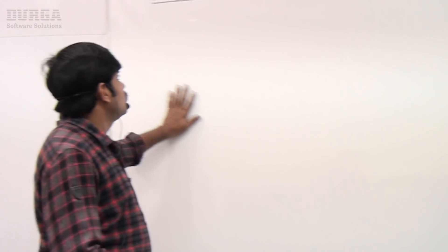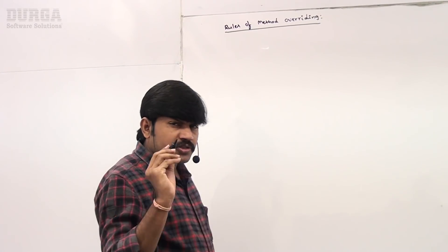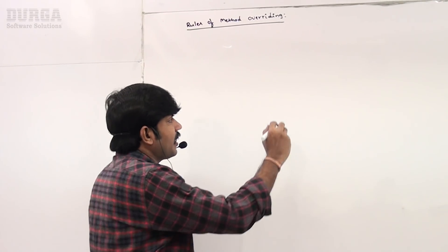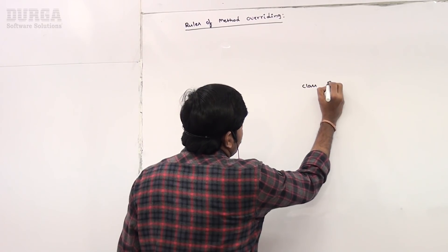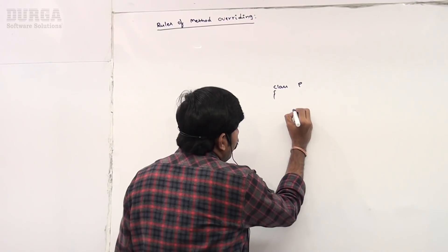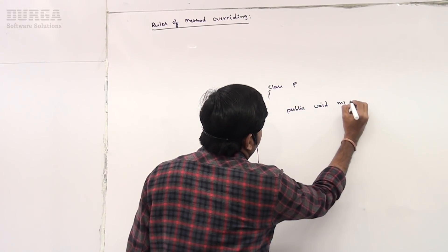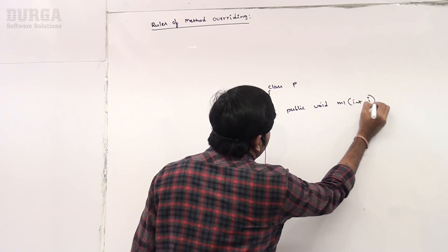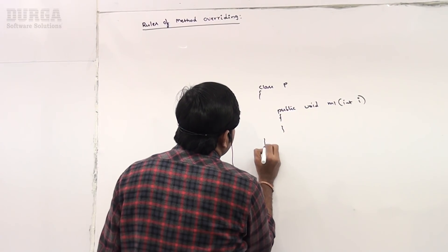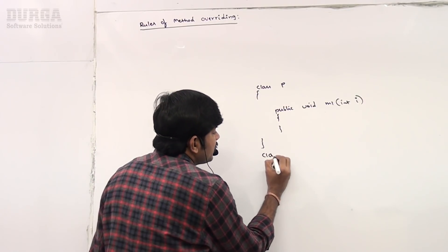We have to check each and every detail in overriding, that's why overriding is not that easy a process. So what are the rules for method overriding? First rule: here I'm taking class P. Observe very carefully — class P has a method: public void m1(int i). This is the method we have in class P.